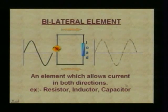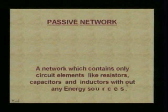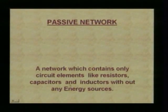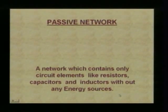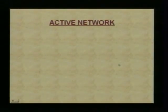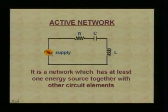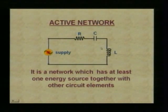Now let us see what is meant by a passive network. A network which contains only circuit elements like resistors, capacitors, inductors and without any energy sources is called a passive network. An active network is a network which has at least one energy source together with other circuit elements.